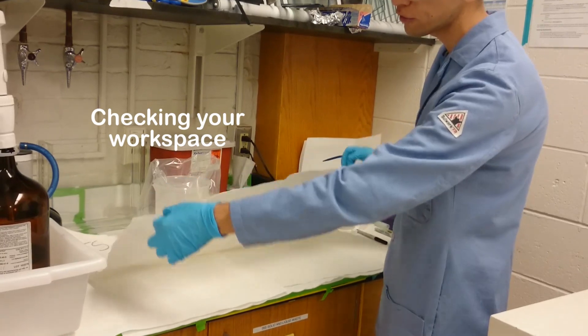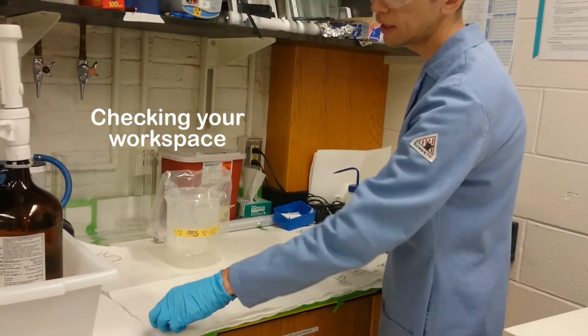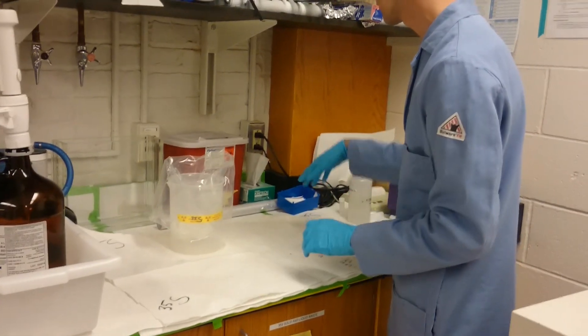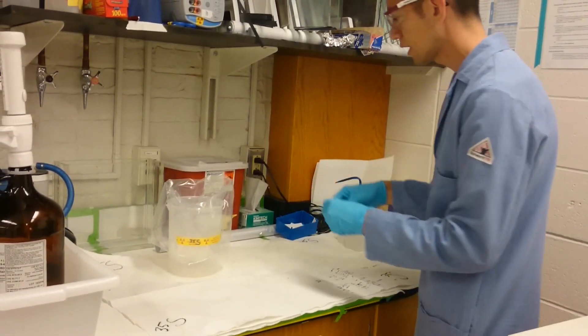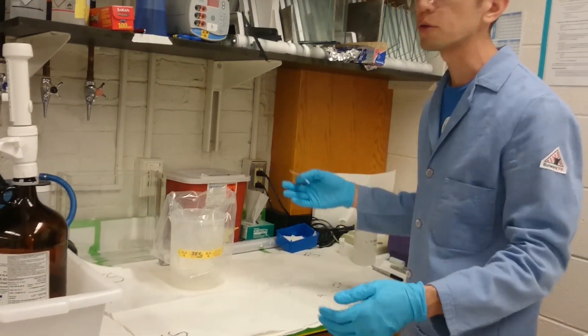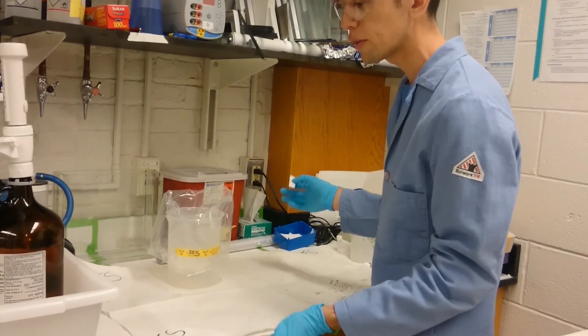Whenever you're working, you should always have an additional piece of bench paper down that's labeled with the isotope that you're working with. If this ever gets hot, you can fold it all up, put it in the waste drum, and get a new one. Otherwise, you can reuse it.